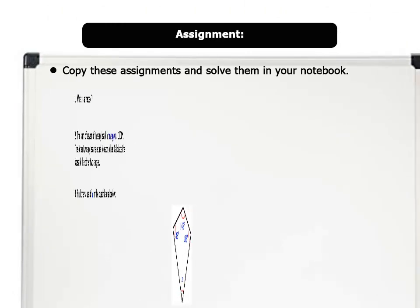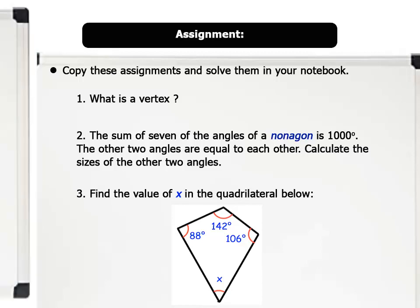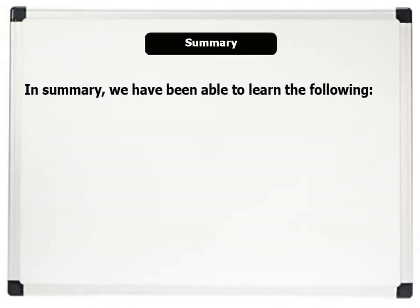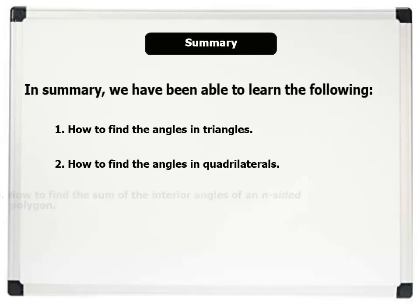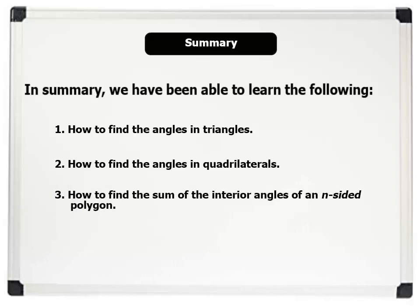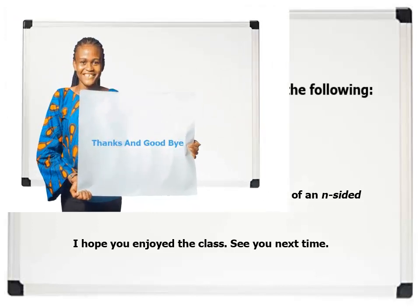Now pause this video, copy these assignments and solve them in your notebook. In summary, we have learned the following in this lesson: one, how to find the angles in triangles; two, how to find the angles in quadrilaterals; and three, how to find the sum of the interior angles of an n-sided polygon. I hope you enjoyed the class. See you in the next lesson. Thanks and goodbye.